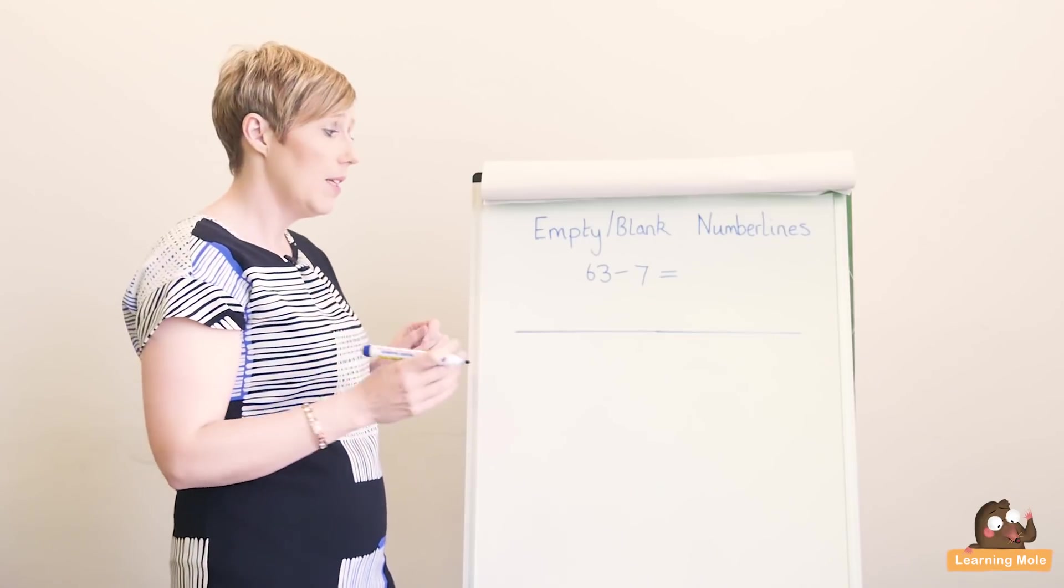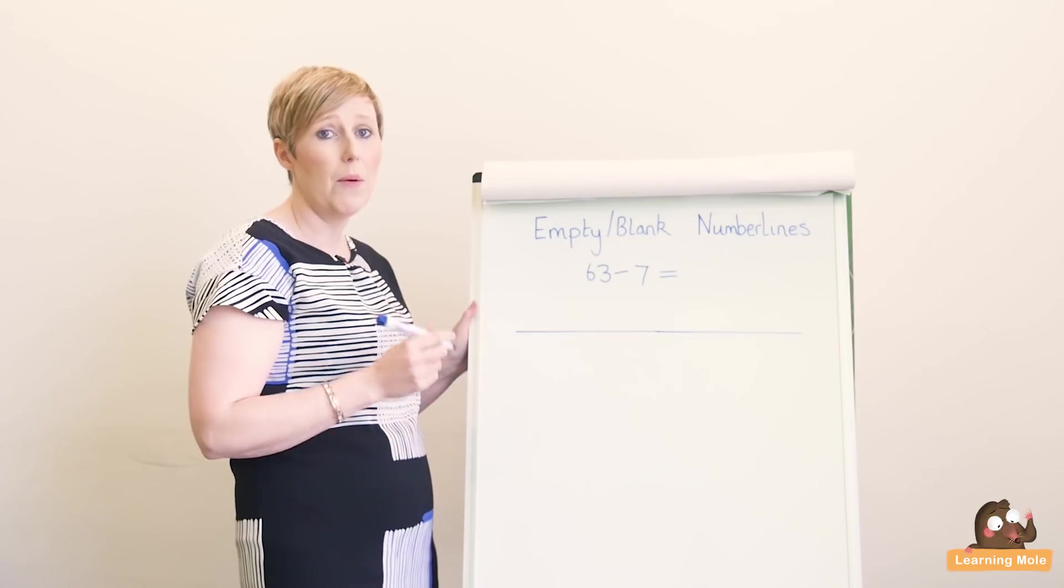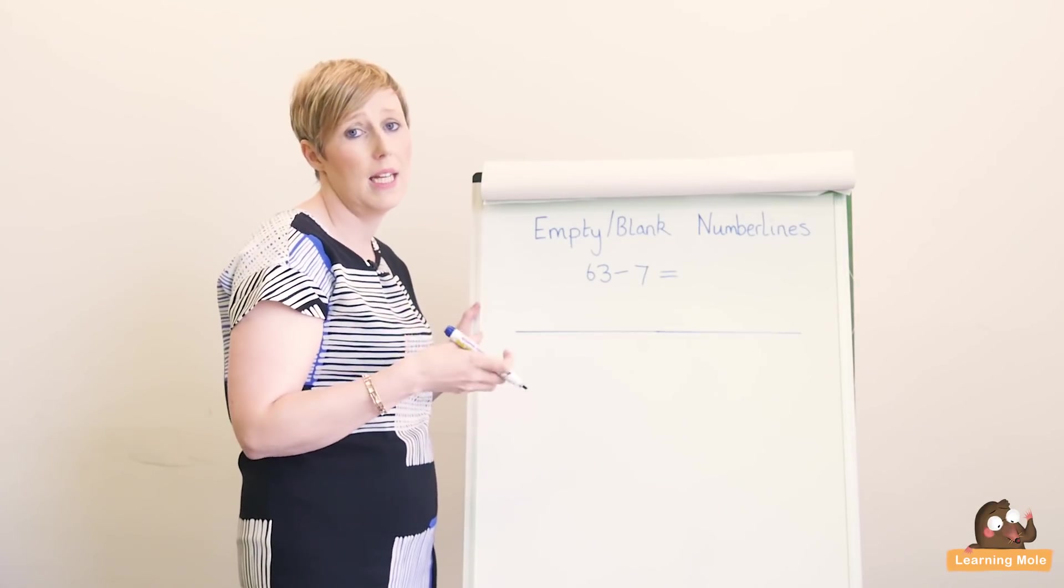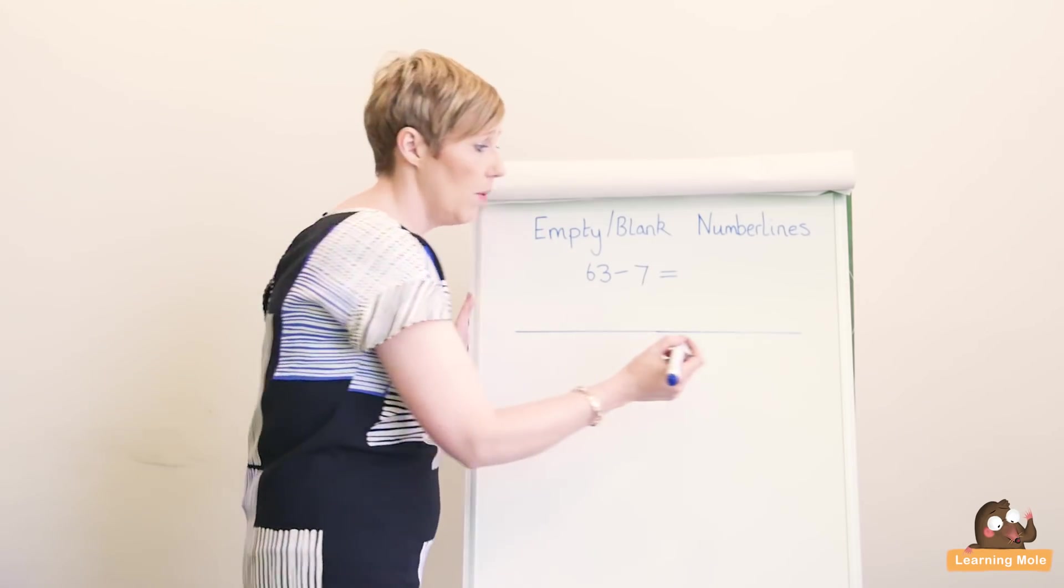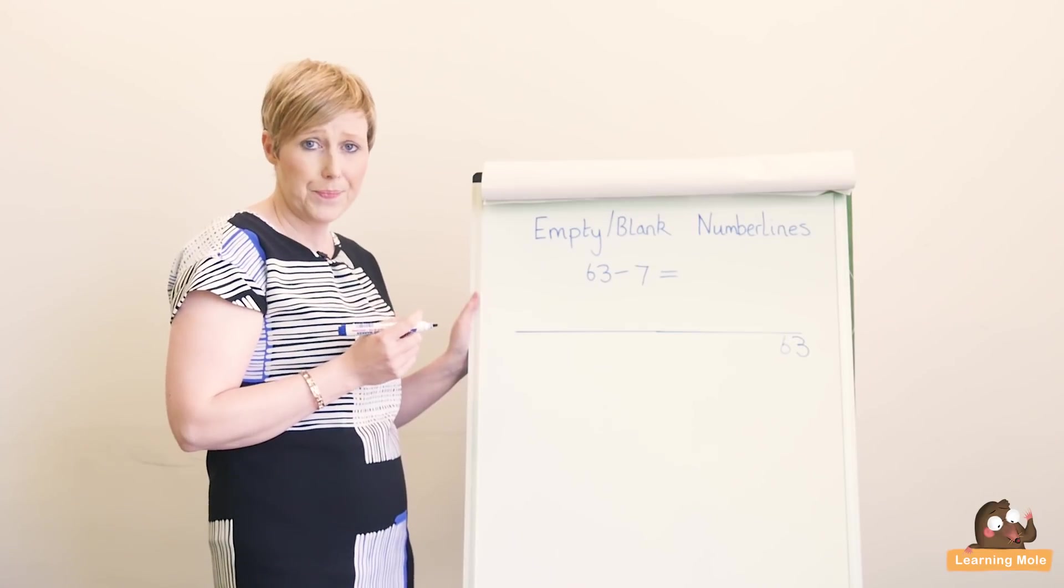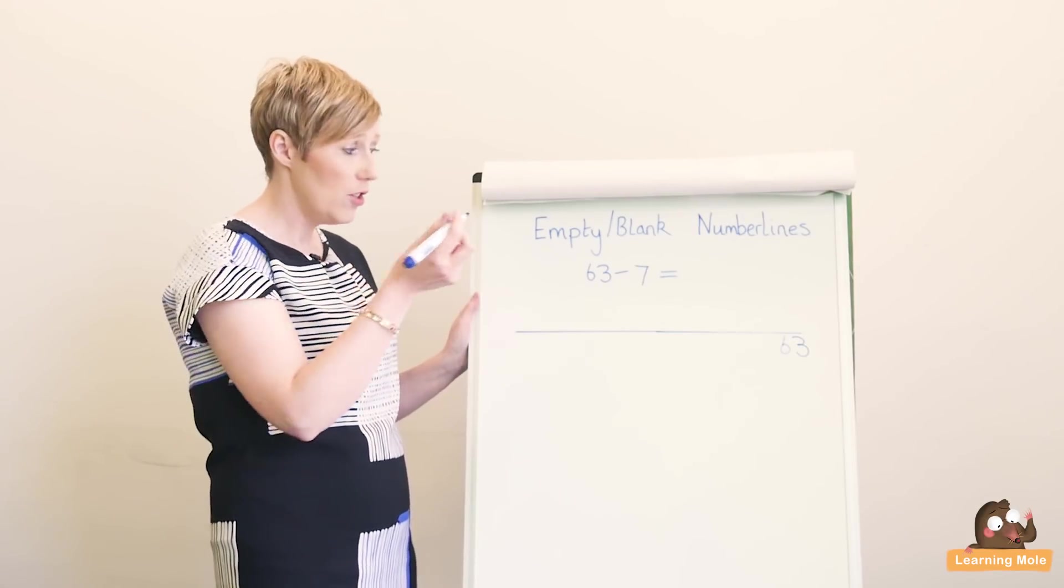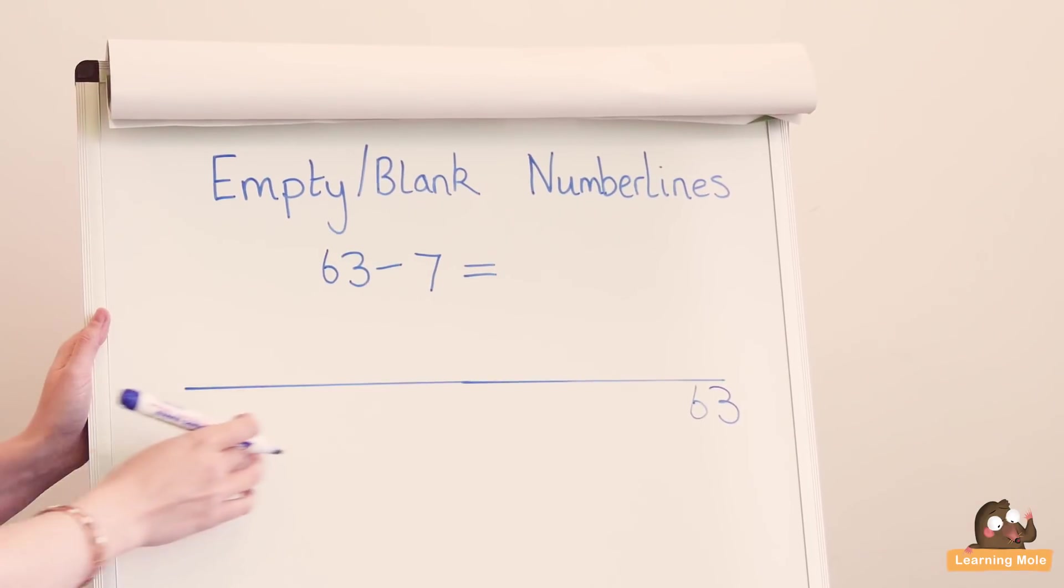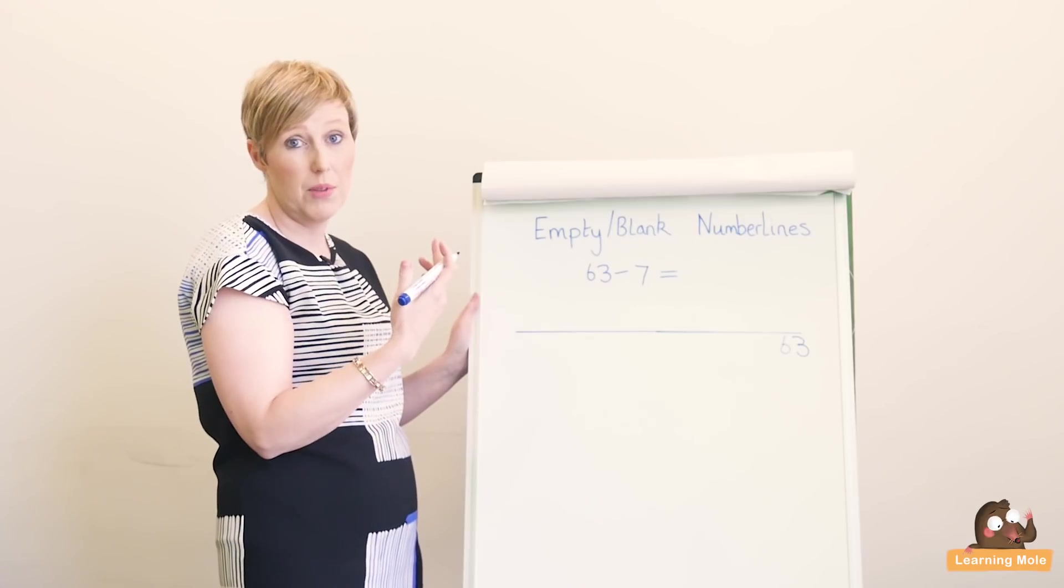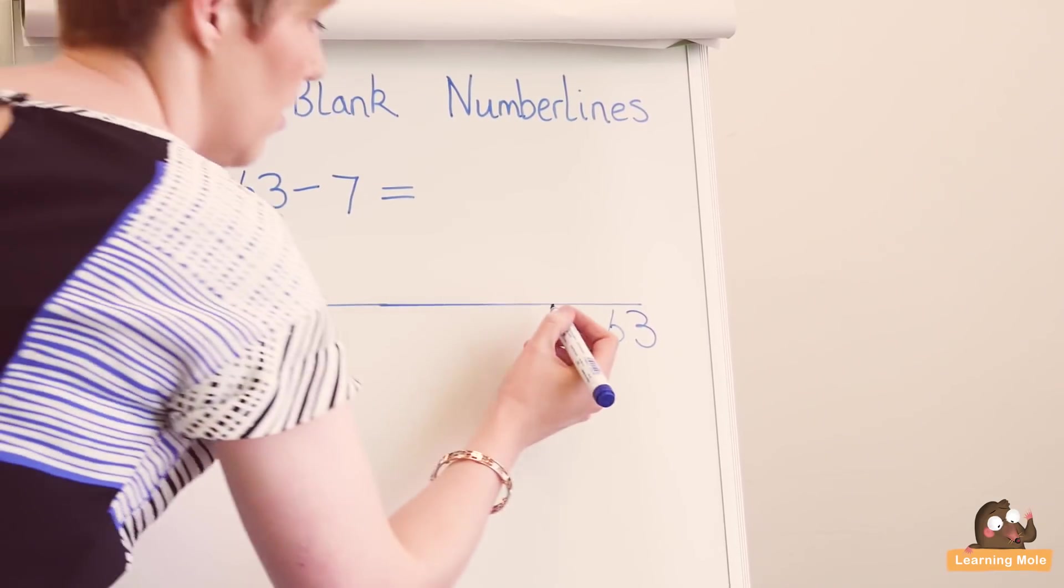How an empty number line works is you basically draw a line and then put your starting number. I would always encourage you to use the end of the line to reinforce the idea that subtraction is counting backwards, so you put your biggest number at the end of your line and then it's just a case of jumping backwards. You can either have the numbers on there before, or you can put the numbers on as you go along. So I'm going to do 63, 62, 61.